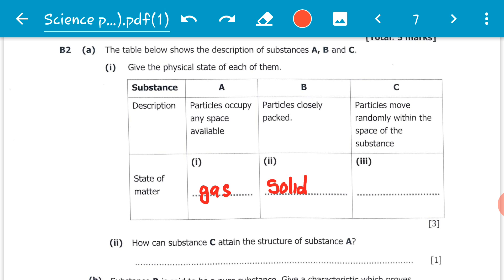Substance C: particles move randomly within the space of the substance. The particles in this state of matter can move from one point to another but are restricted - can only move within the confinement of the substance. And this can only happen in liquids, so substance C is in liquid state.